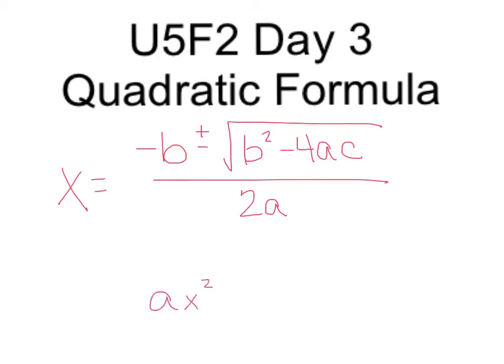All over 2a. Remember it's ax squared plus bx plus c. The a is the coefficient for x squared, b is the coefficient for x, and c is the last number. So that's the formula — write that down. You should have that memorized by the end of the unit. So: x equals opposite b plus or minus the square root of b squared minus 4ac all over 2a.